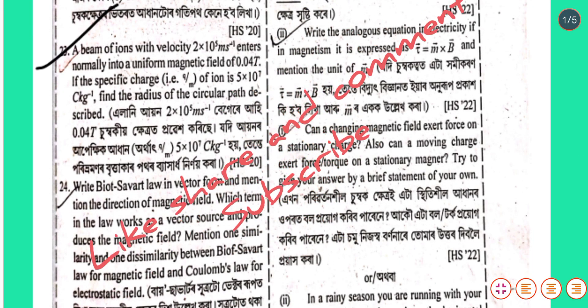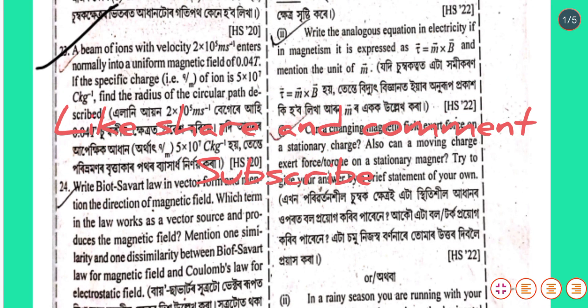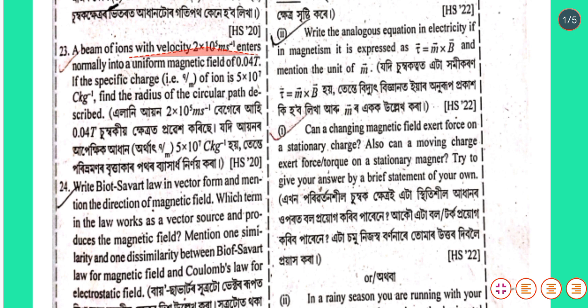Question number 23: A beam of ions with velocity 2×10⁵ meter per second enters normally into a uniform magnetic field of 0.04 tesla. If the specific charge, that is q by m, of the ion is 5×10⁷ coulomb per kg, find the radius of the circular path.